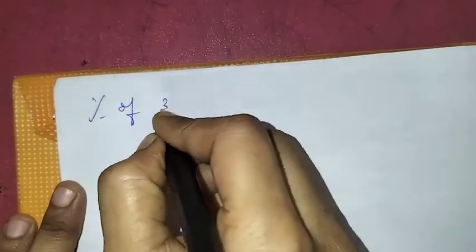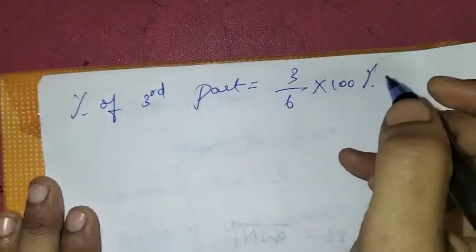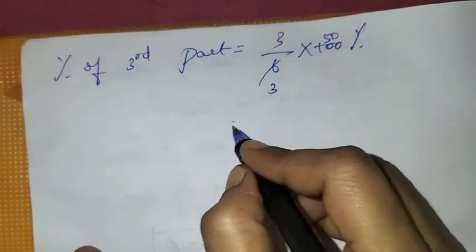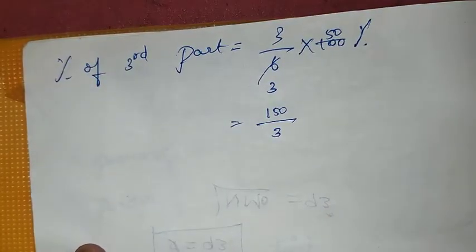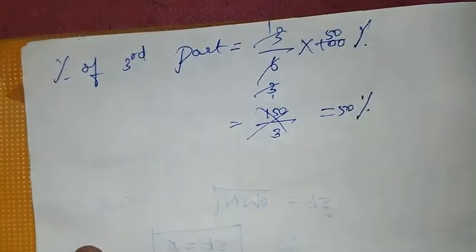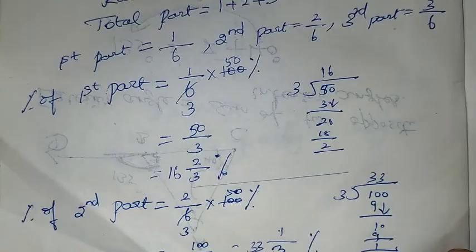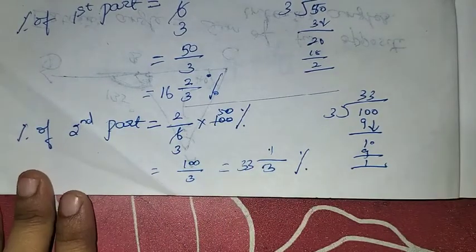Percentage of third part: third part is 3 by 6 times 100%. After cancellation, 3 into 50 is 150 by 3, which is 50%. This is correct. The simple concept is: take the ratio, find the total part, convert that fraction to percentage by multiplying by 100.